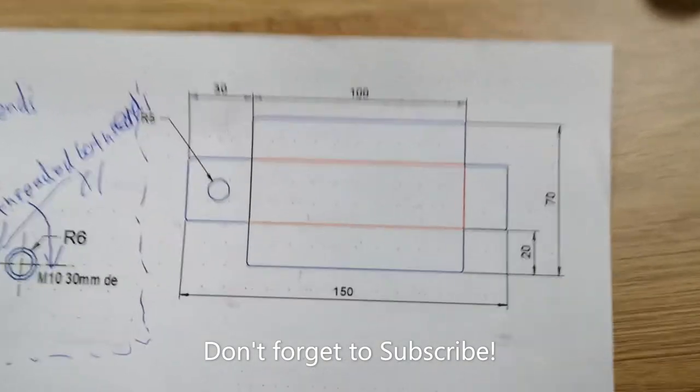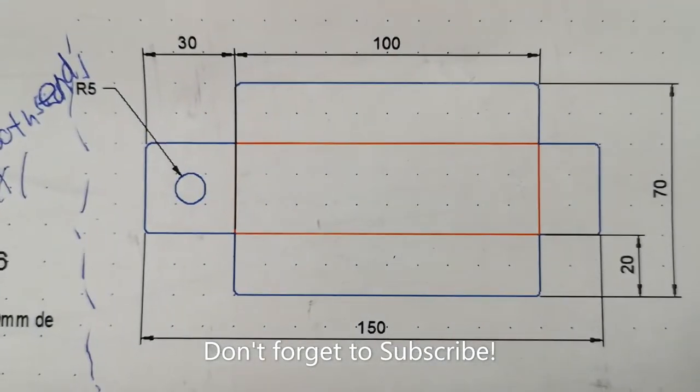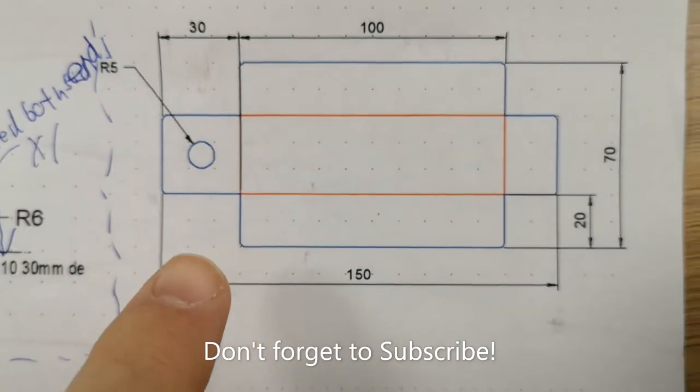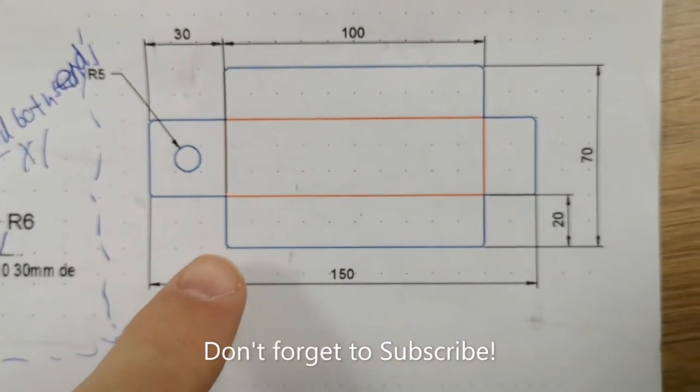So looking at the drawing there for the lampshade, you'll notice it does have rounded corners there.